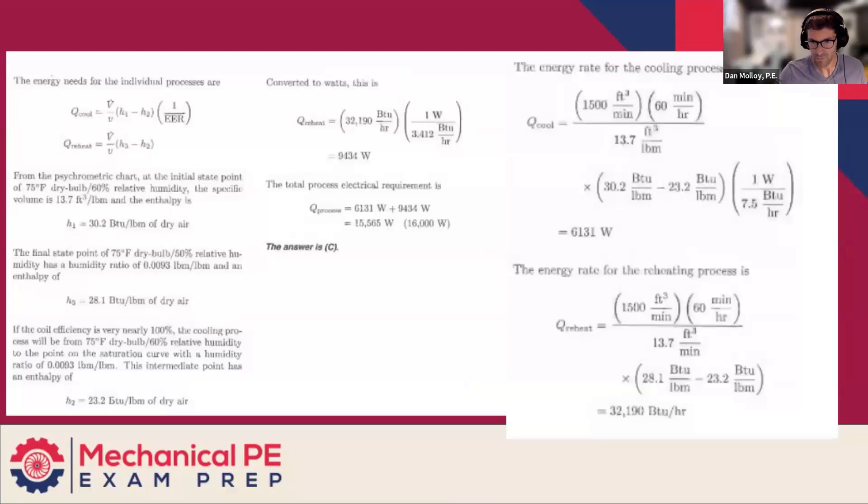And I think, yeah, if we look at the final answer, the 6131 was the compressor to do the cooling process. And the reheat was 9400. Like that's 10KW. That's a lot of juice. So yeah, we're working through it. We're going through on your own. And then the EER instead of the COP with being different units, you know, it's a minor thing, but if you haven't looked at EER in a while, you might kind of freeze up and go, what am I going to do with this? So just go slow and you'll be okay.